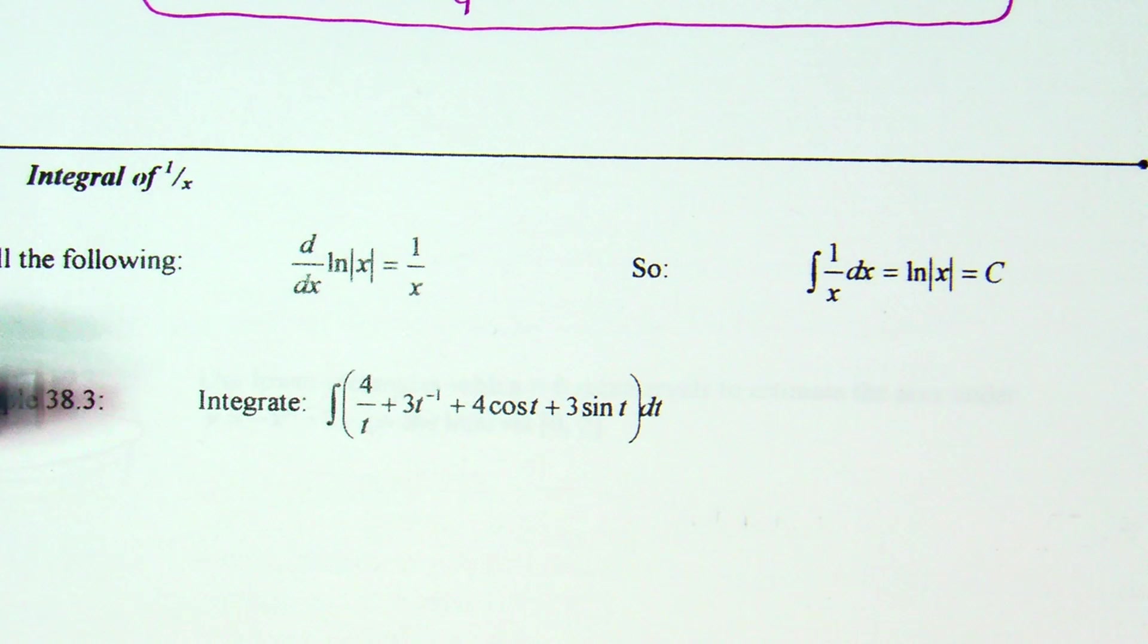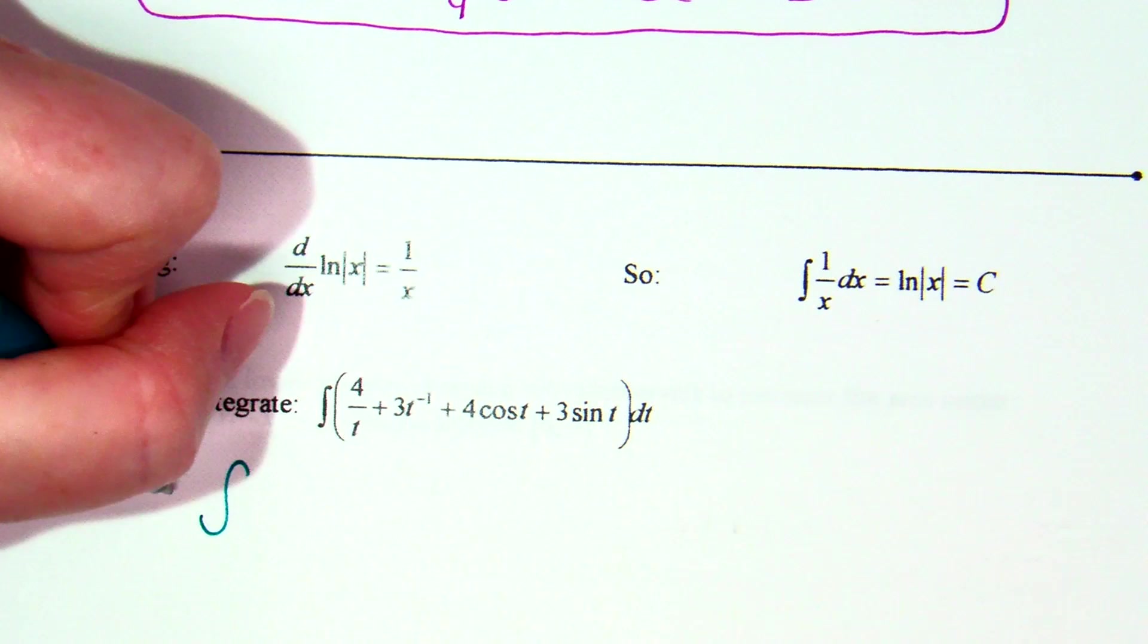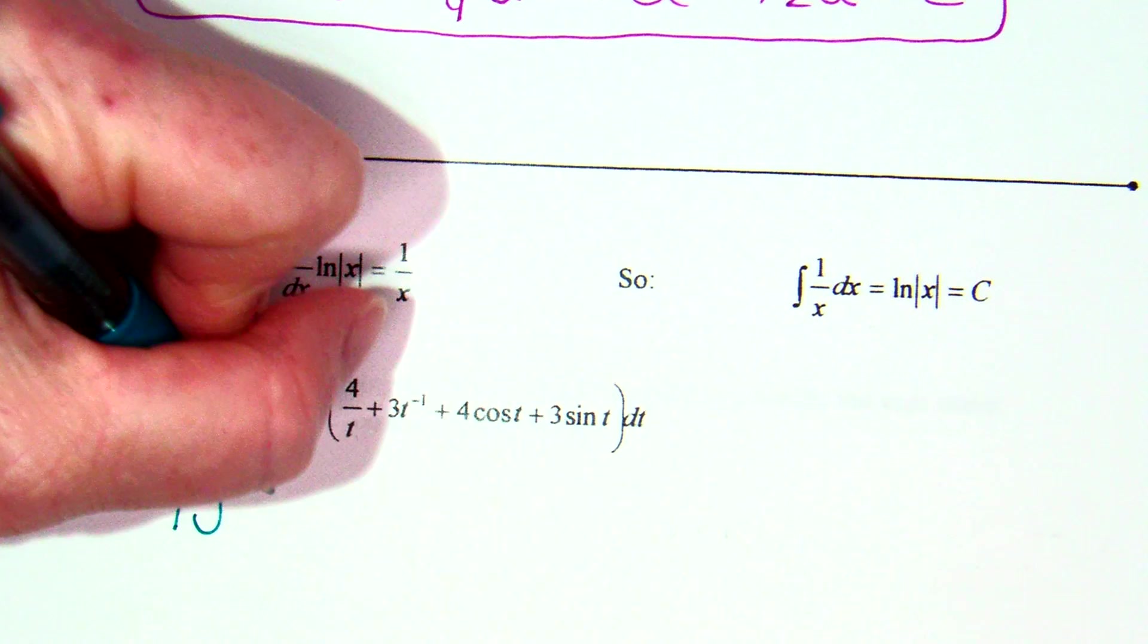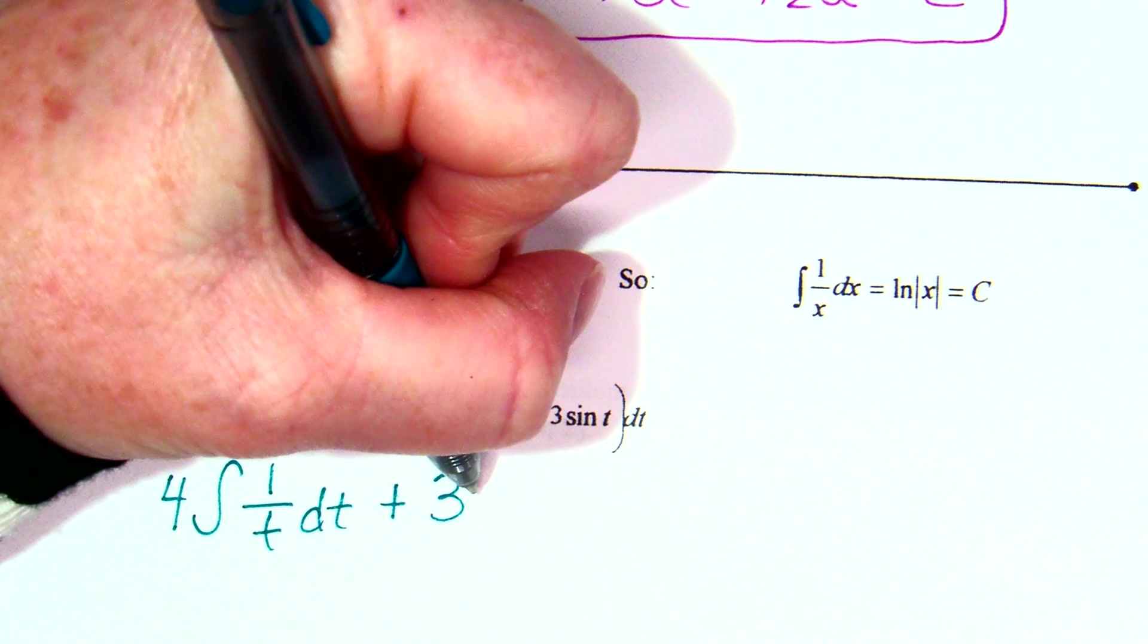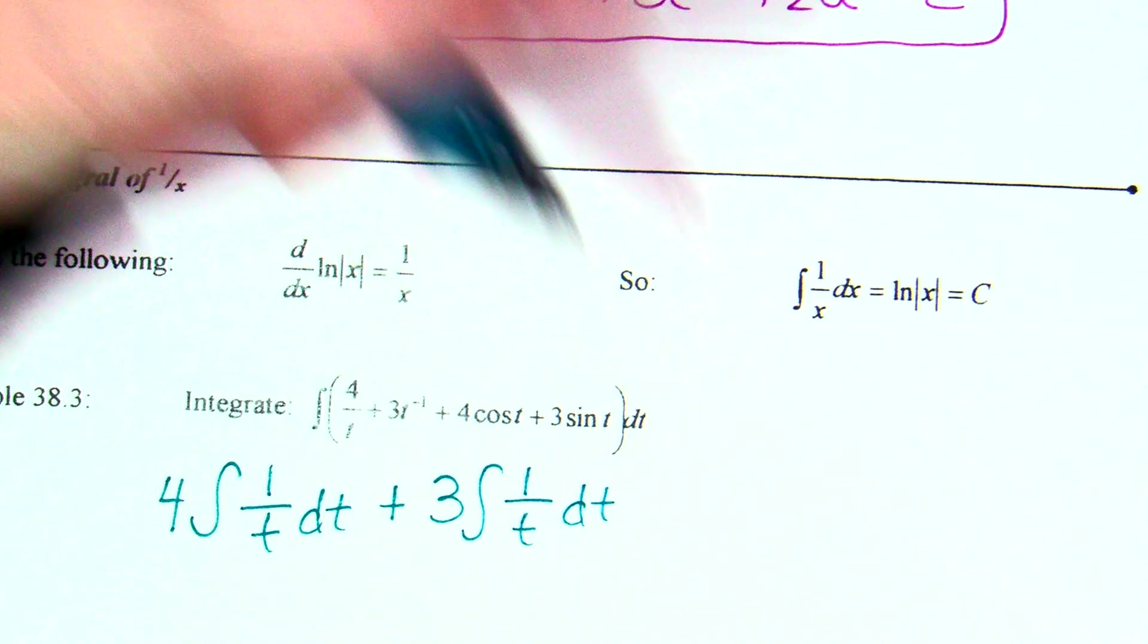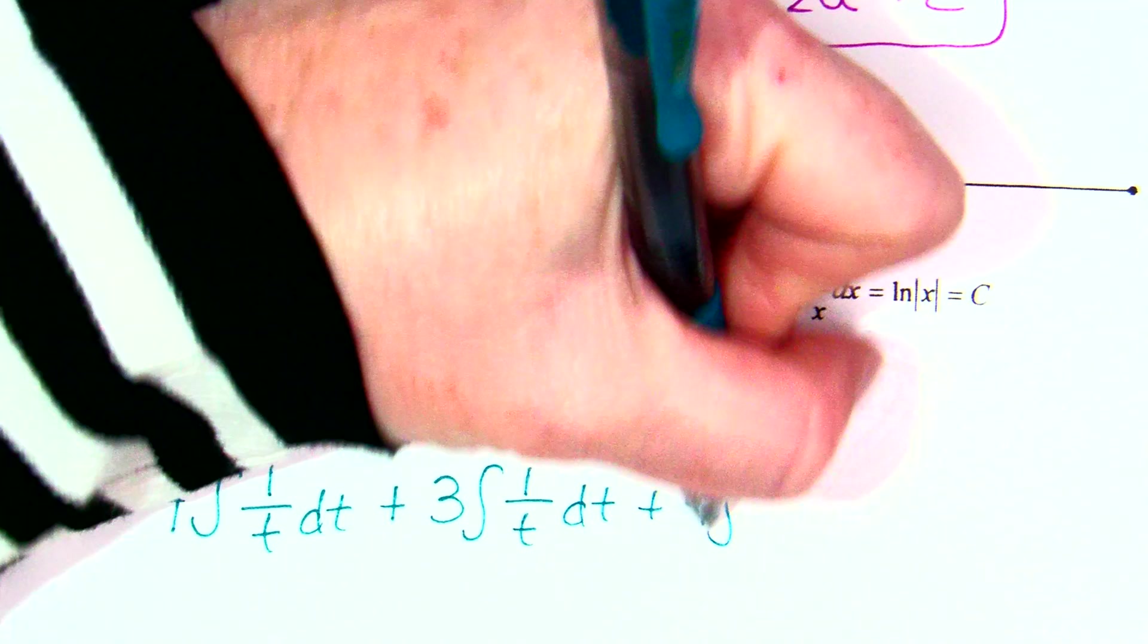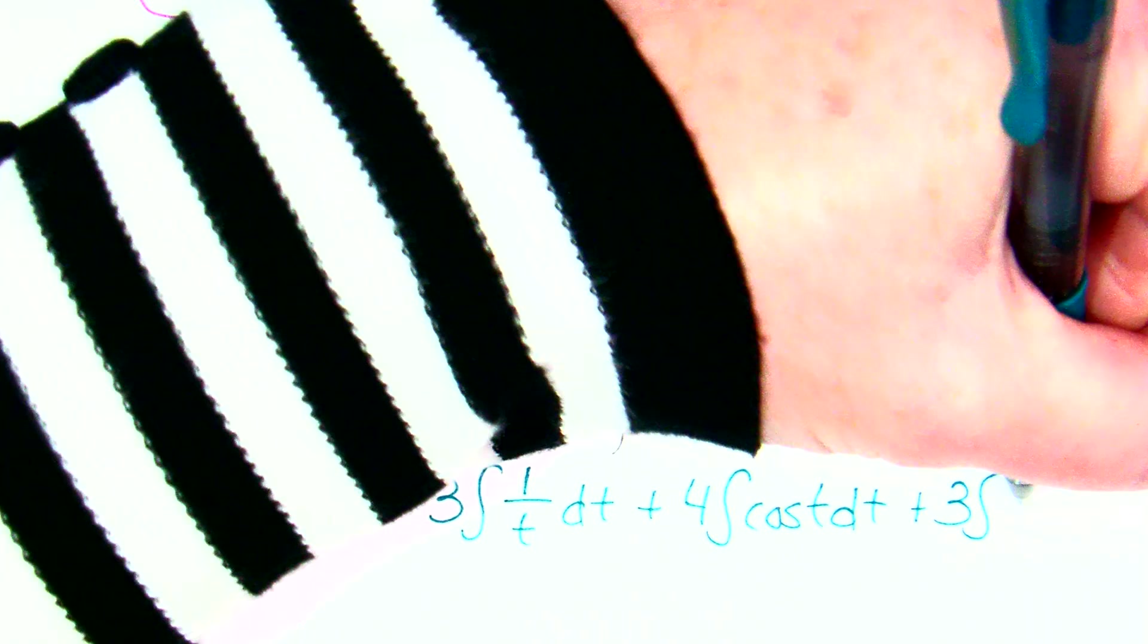So that's all we're throwing in on this one. So I'm going to write out my pieces again. Now, on this first one, it's 4 over T. What's my constant I can pull out front of my integral? There's a constant of a 4, right? So if I pull the 4 out front, what remains in my integral? 1 over T dt. Plus 3 times the integral. What is T to the negative first? 1 over T dt plus 4 integral cosine t dt plus 3 integral sine t dt.